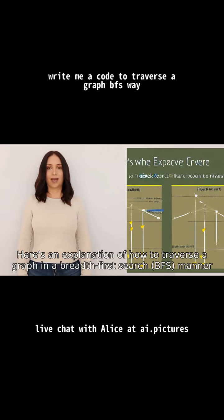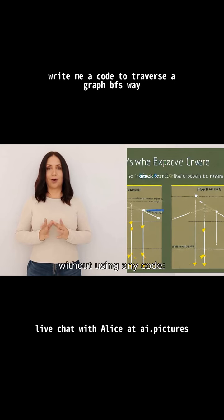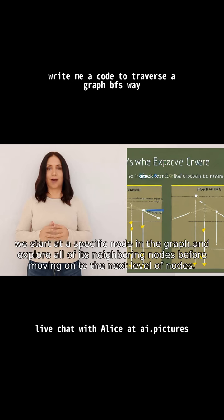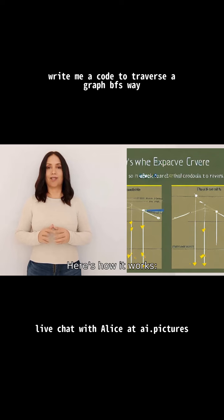Here's an explanation of how to traverse a graph in a breadth-first search (BFS) manner without using any code. To traverse a graph using BFS, we start at a specific node in the graph and explore all of its neighboring nodes before moving on to the next level of nodes. Here's how it works: